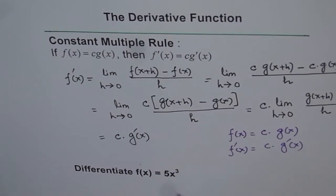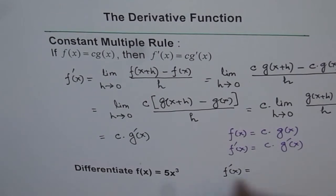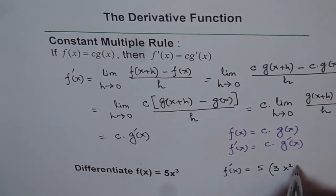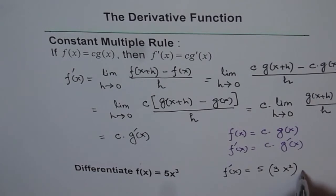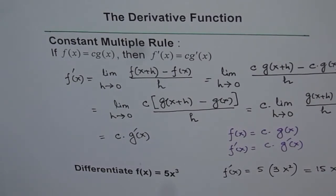As a practice, we have an example here. f of x is 5 times x cube. Apply the formula and get the result. The g of x, the other function, is x cube. So we can give the answer as f prime of x equals 5 times the derivative of x cube. And what is the derivative of x cube? We will use the power rule — that is 3 times x square. So we get 5 times 3 is 15, x square, and that is the answer. That is how we can find the derivative of a function multiplied by a constant.